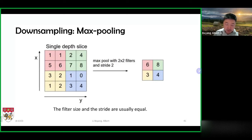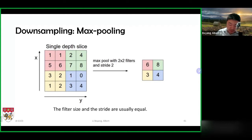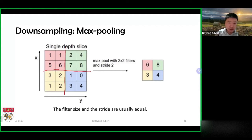The first type of downsampling operation we'll talk about is max pooling. It's a very simple operation. For example, if I have a four by four input image or input feature map, I will divide it into two by two squares. Here I have differentiated them by color: the red portion, the green portion, the yellow, and the blue portion. From each of the two by two portions, I will take the maximum value.